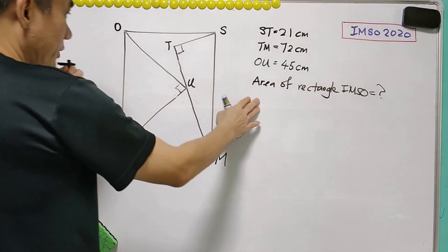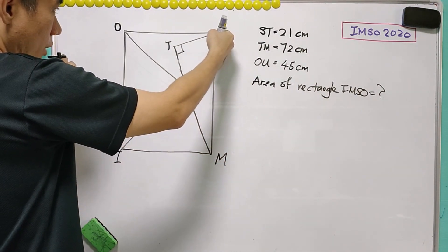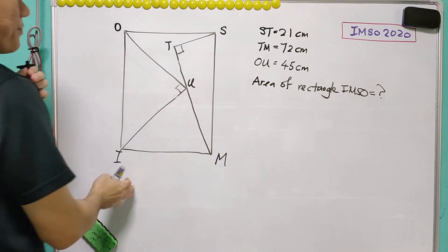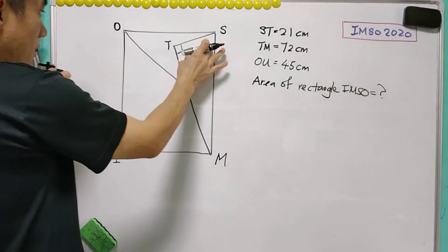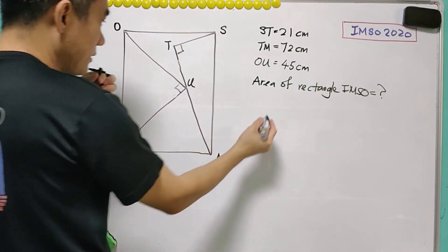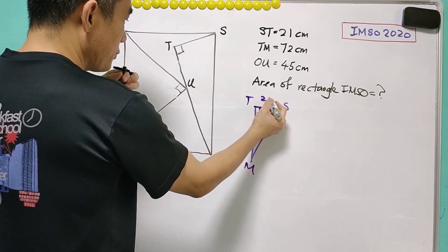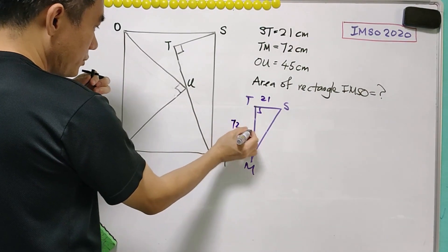In order to get the area of rectangle IMSO, what we need to do is find SM and IM. In order to find SM, it is not difficult because this is a right angle triangle and we know that ST equals 21 cm and TM equals 72 cm.